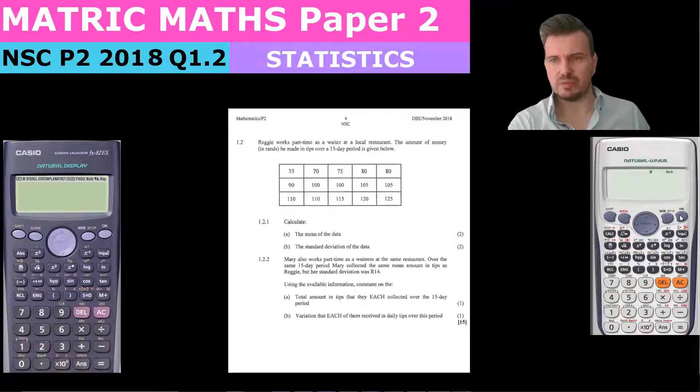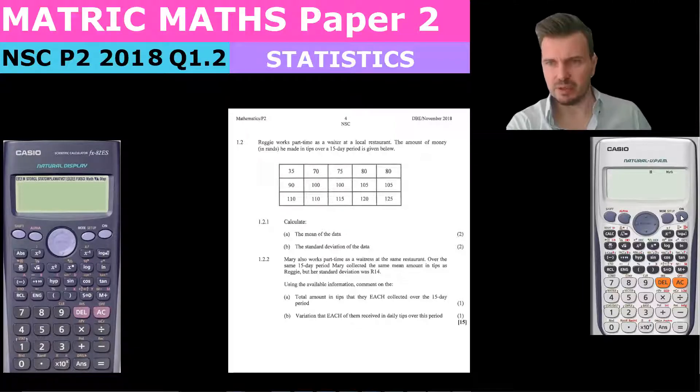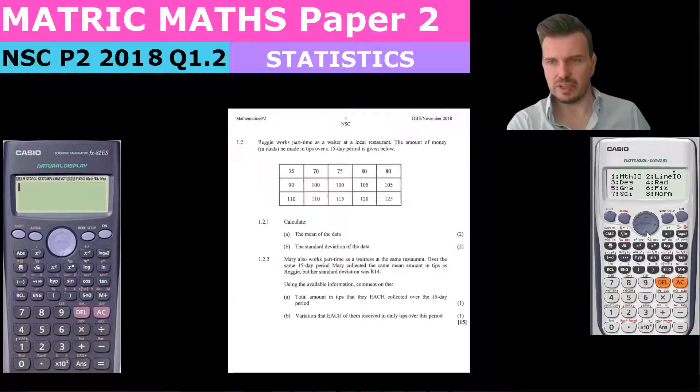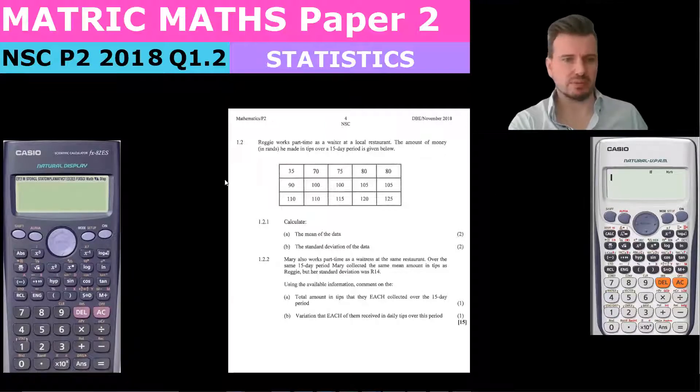Before the exam, you're going to make sure that your frequency table is on, and this saves time. So what I do on my silver calculator is I say shift mode, and then I go down and I go to stats number four and I say one, and that's going to permanently turn my frequency table on.